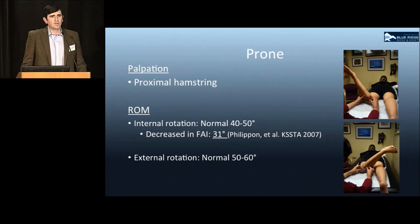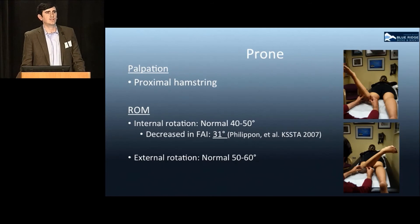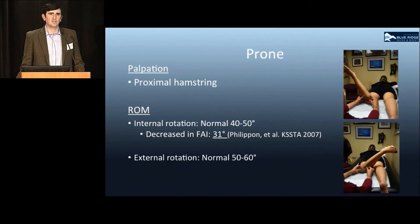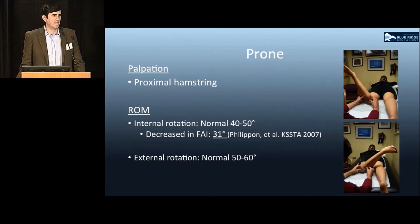In the prone position, palpation is carried out for the proximal hamstring. Range of motion is also preferred in the prone position because the pelvis is stabilized and easy to measure. Internal rotation is 40 to 50 degrees, external rotation 50 to 60 degrees, and prone internal rotation has been shown to be decreased in FAI by Mark Philippon.